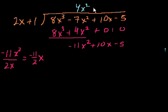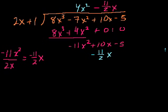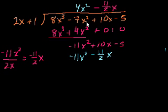We write that in the x place: minus 11 halves x. Now, what is minus 11 halves x times 2x plus 1? Minus 11 halves x times 1 is minus 11 halves x — we write that in the x position. And minus 11 halves x times 2x is minus 11x squared. After every step, we're canceling out the largest degree of the polynomial we're dividing into.